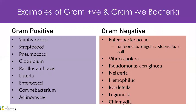It's good to know some examples of Gram positive and Gram negative bacteria. Gram positive examples include Staphylococci, Streptococci, Clostridium (like Clostridium tetani), Bacillus anthracis (which causes anthrax), Listeria, Enterococci, Corynebacterium (which causes diphtheria), and Actinomyces. Gram negative bacteria include Enterobacteriaceae such as Salmonella, Shigella, Klebsiella, Escherichia coli, Vibrio cholerae, Pseudomonas, Neisseria meningitidis and gonorrhoeae, Haemophilus, Bordetella, Legionella, and Chlamydia.